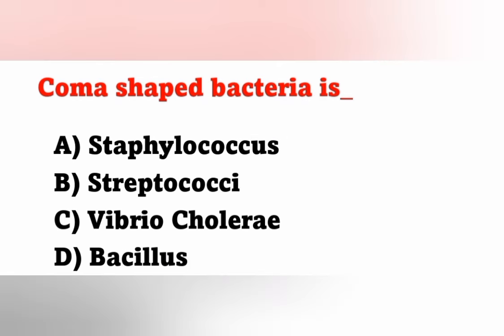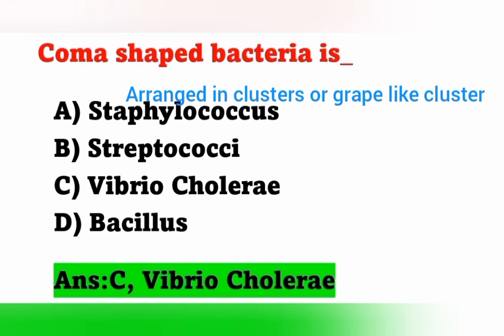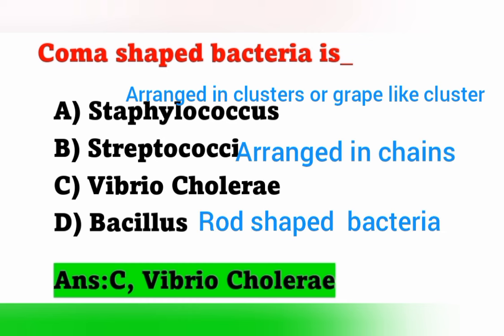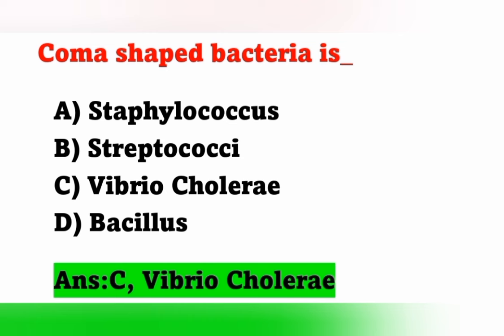The next question: comma-shaped bacteria. Options: Option A, Staphylococcus; Option B, Streptococcus; Option C, Vibrio cholerae; Option D, Bacillus. Comma-shaped bacteria is Vibrio cholerae — Option C is the correct answer. Staphylococcus are arranged in clusters or grape-like clusters. Streptococcus are arranged in chains. Bacillus are rod-shaped bacteria. Vibrio cholerae is comma-shaped bacteria.